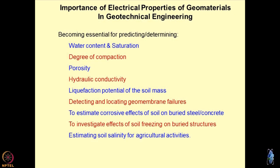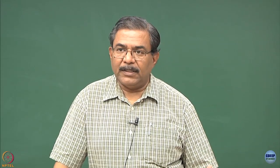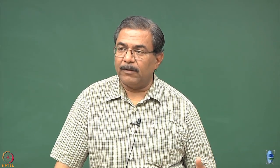Degree of compaction is another important parameter. Nowadays, in the age of electronics, people want to measure the degree of compaction of the soil mass. Core cutter, sand replacement, and balloon methods have really been shelved off now. Looking at the speed and pace of infrastructure development, it becomes very difficult to adopt conventional techniques for finding degree of compaction. People are interested in finding in-situ densities using sensors so that degree of compaction can be established. In today's electronics era, everybody wants to sense parameters associated with geomaterials using sensors — and this is where the electrical properties of geomaterials become very, very important.